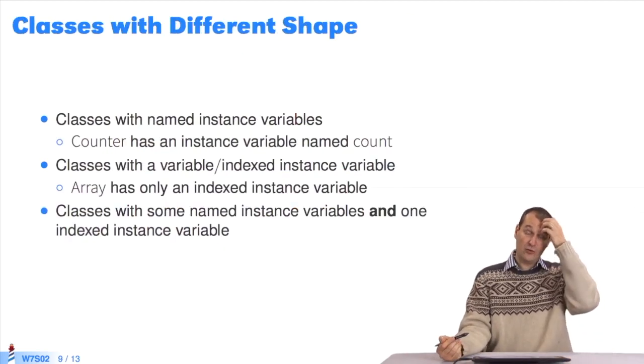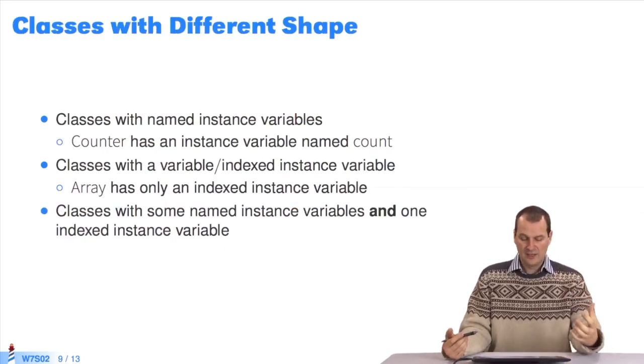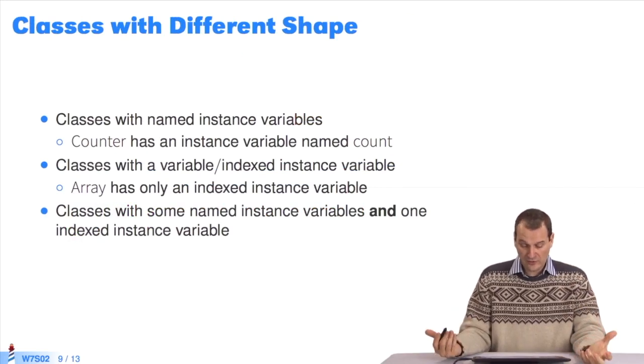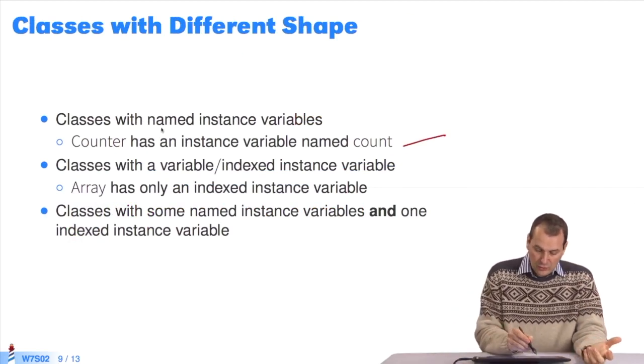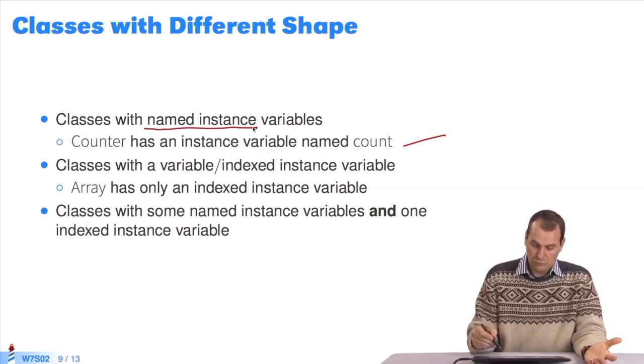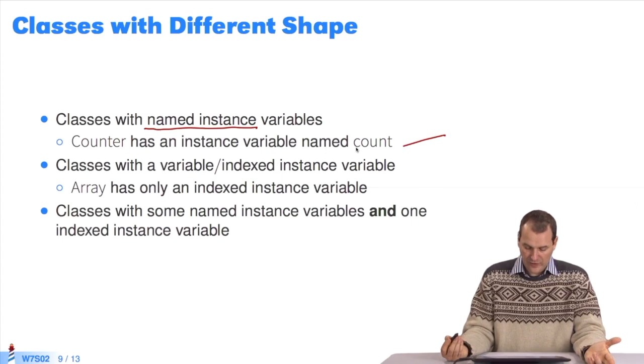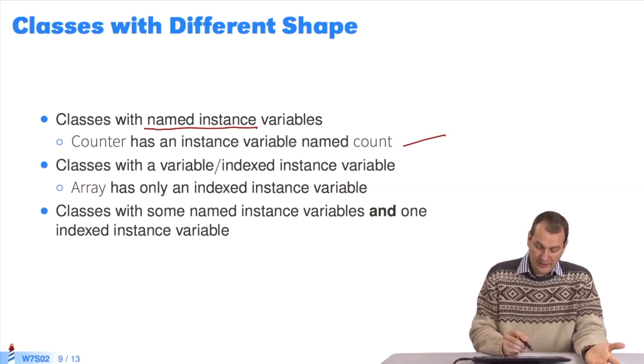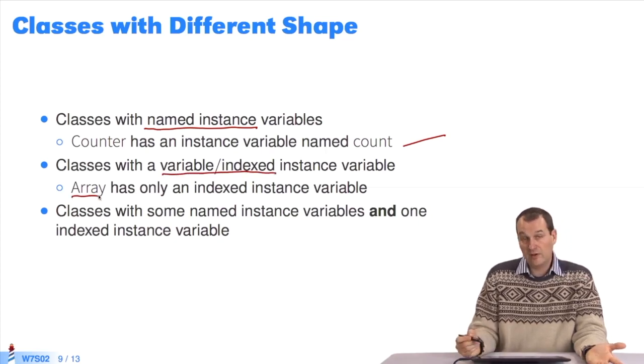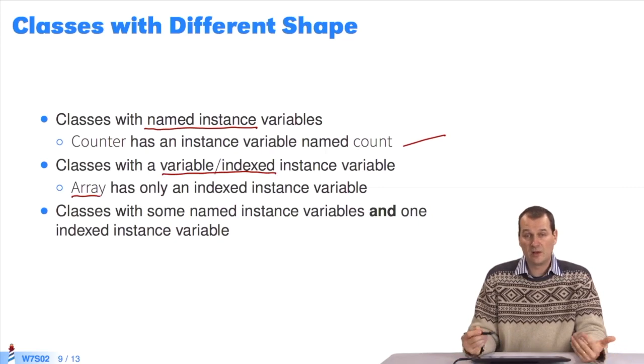So, in Pharo, there are objects or classes that take different forms. There are classes that only have named instance variables, like counter class with count or dice class with the number of sides. Then, we have the classes that only have a variable or indexed zone, like array class. Then we have other classes that are a mix of both.